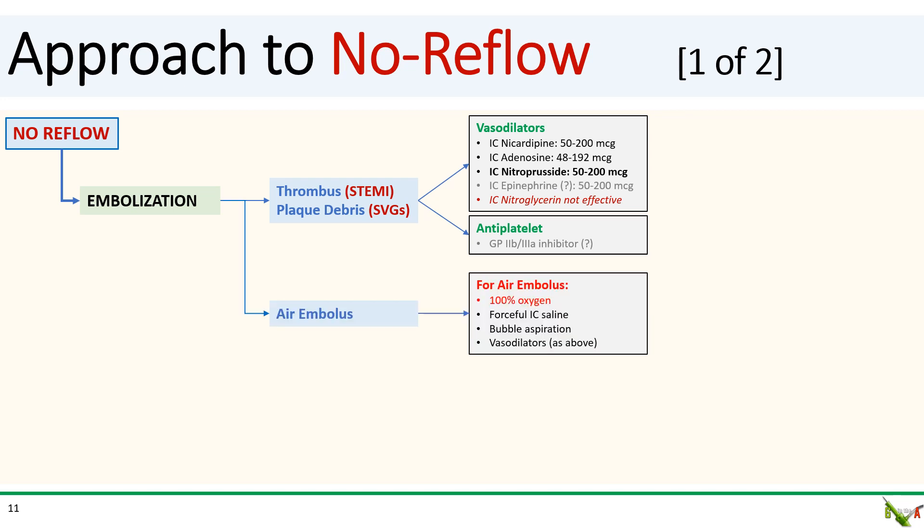Another possibility is an accidental air embolus. The mainstay of treatment here is immediate administration of 100% oxygen, as well as forceful injection of intracoronary saline to push the bubbles through. Aspiration, especially for large and proximal bubbles, and the administration of vasodilators are also useful for air embolus.